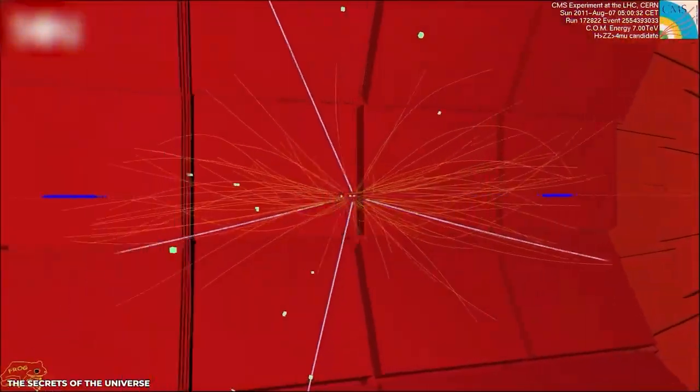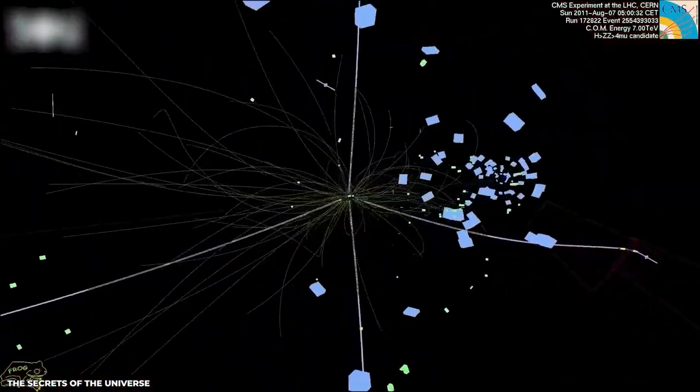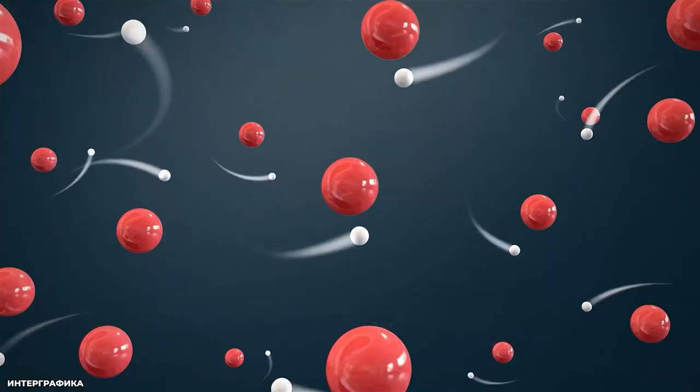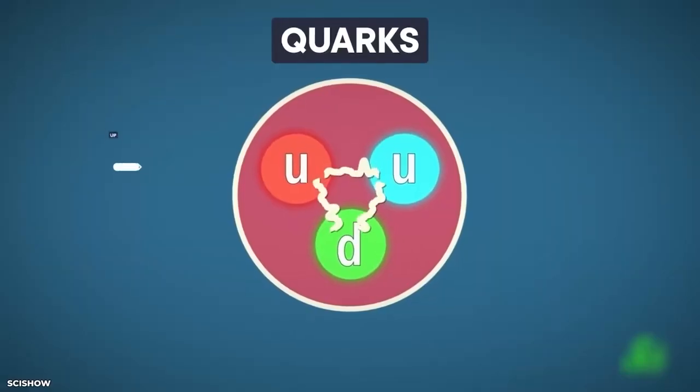But recently, a team of physicists at the Large Hadron Collider at CERN announced the discovery of a pentaquark consisting of two up quarks, two down quarks, and a charm quark.